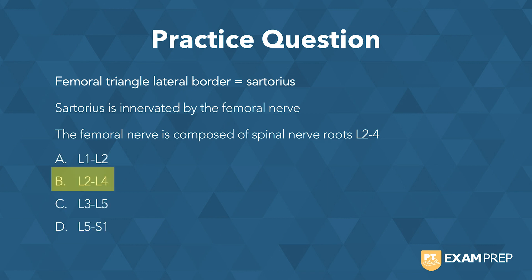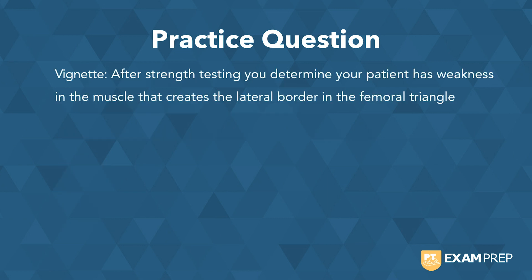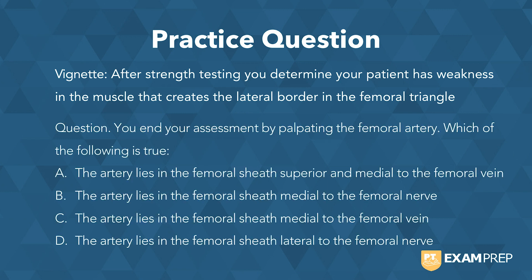Next question. Here's the vignette — same setup: after strength testing, you determine your patient is weak in the muscle that creates the lateral border of the femoral triangle. Here's your question: you end your assessment by palpating the femoral artery. The answer is B — the artery lies in the femoral sheath medial to the femoral nerve.